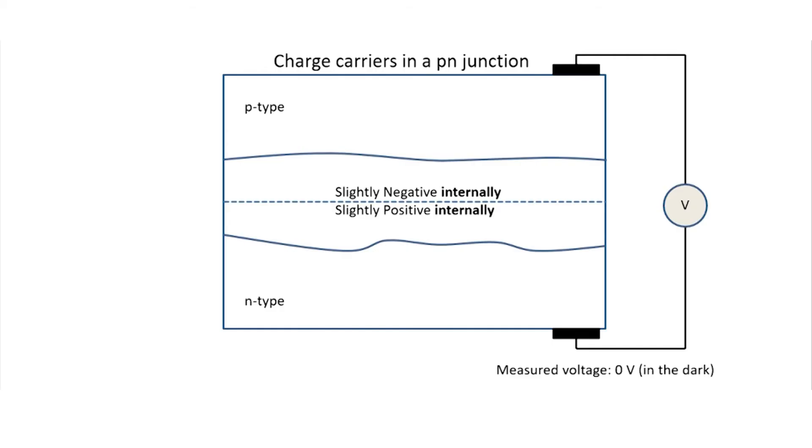Now, here's what's very special about this junction. I'm now not showing any of the internal charges, but we already know that they've rearranged themselves a little bit. But overall, the piece of silicon is still electrically neutral. If we were to measure the voltage across the piece of silicon, the voltmeter would read zero volts. Two pieces of doped silicon brought together do not magically create a power source. The only thing that we have here is a slight internal charge redistribution. That's all.